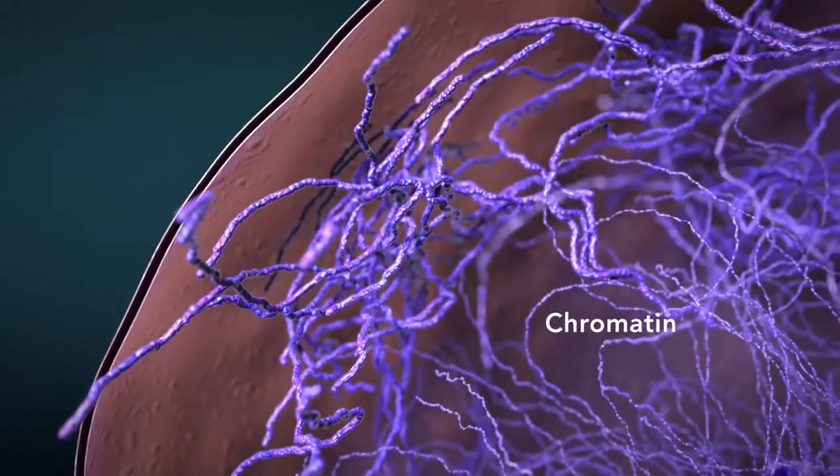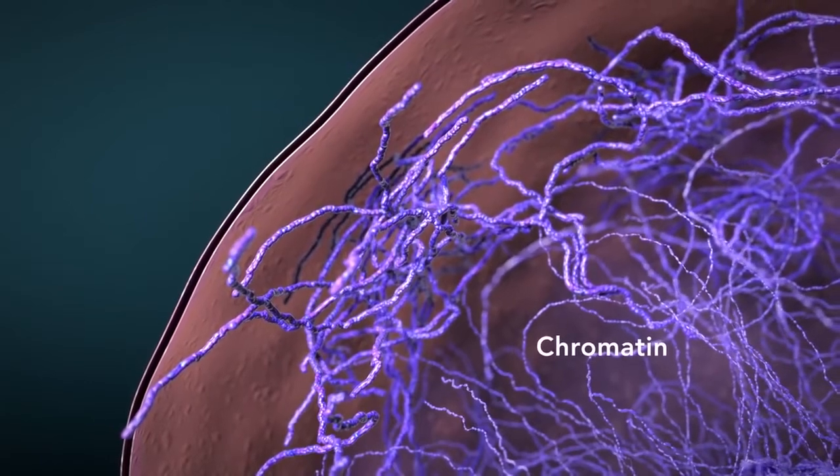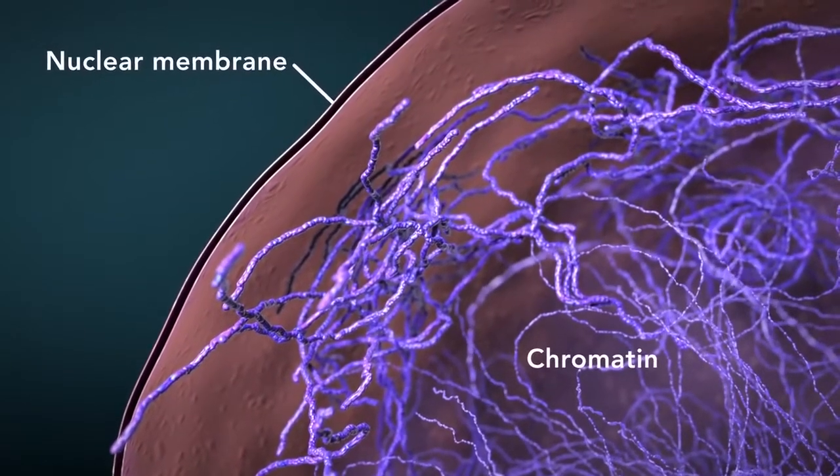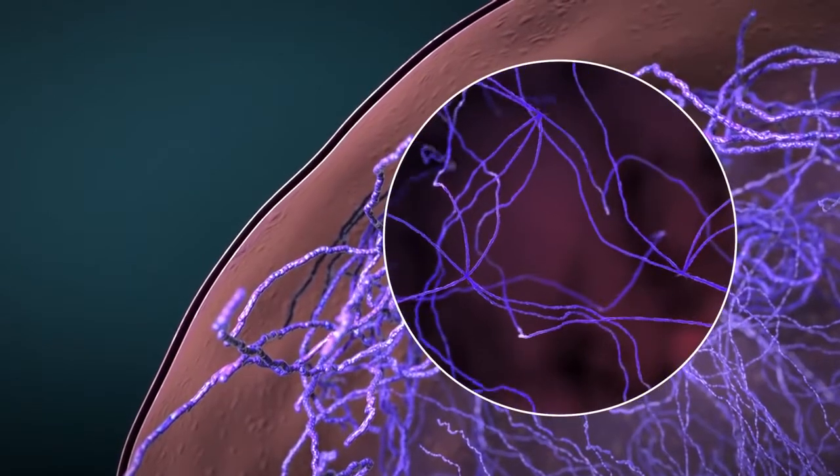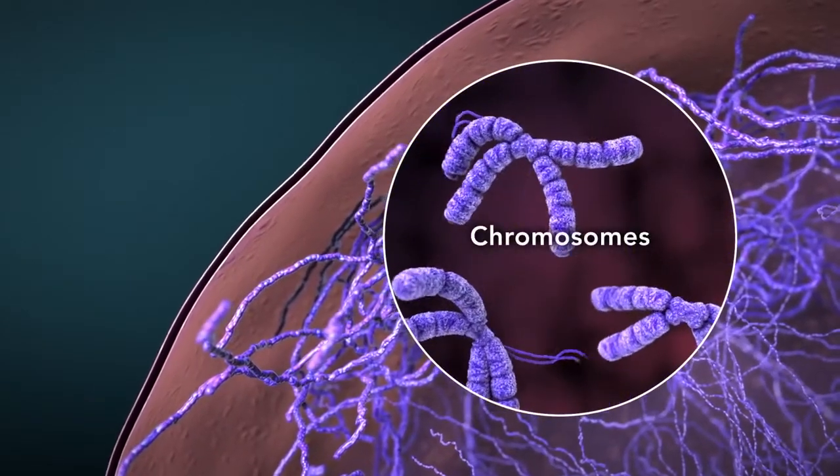Chromatin is the tangled spread out form of DNA found inside the nuclear membrane. When a cell is ready to divide, DNA condenses into structures known as chromosomes.